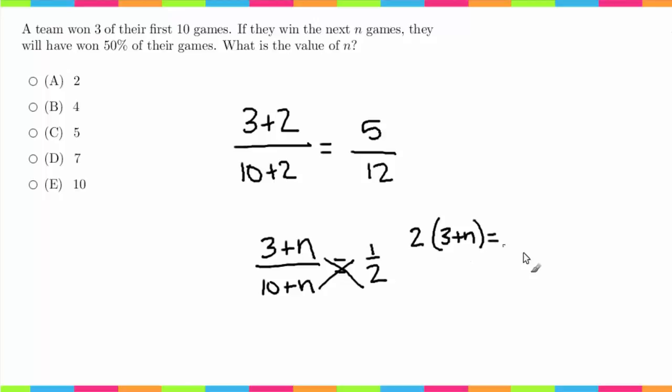Distributing, I get 6 + 2n = 10 + n. I'm going to subtract n from both sides and subtract 6 as well.